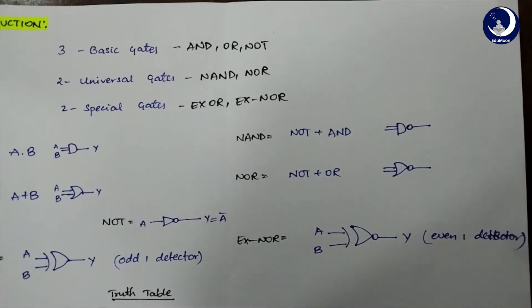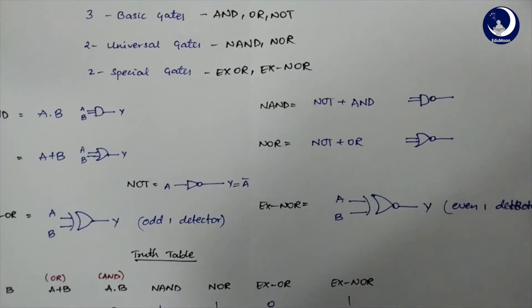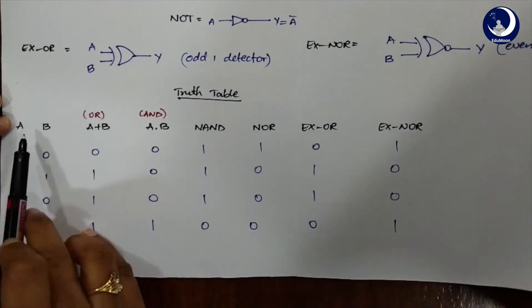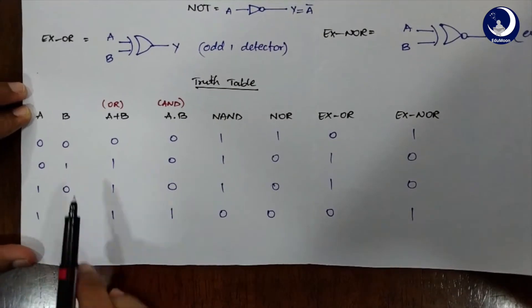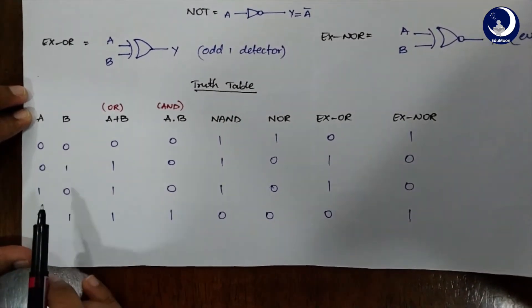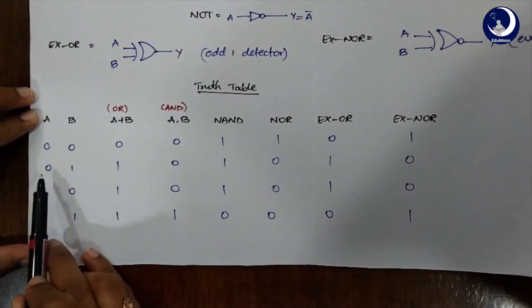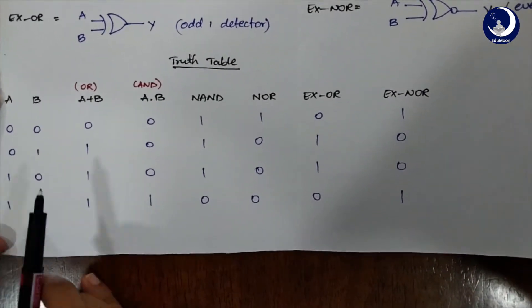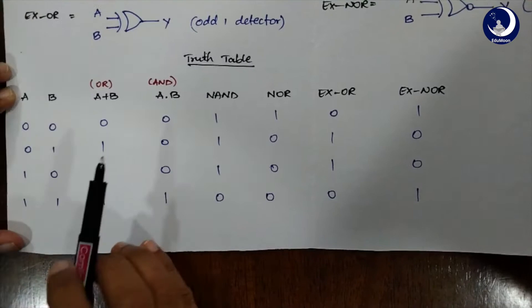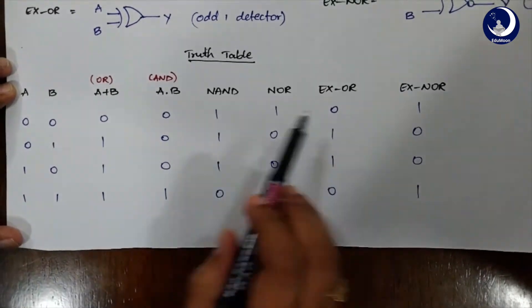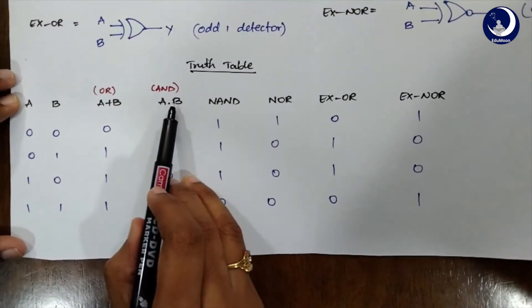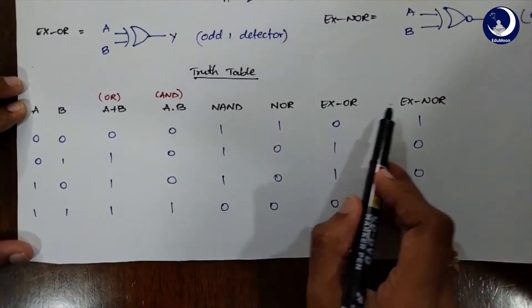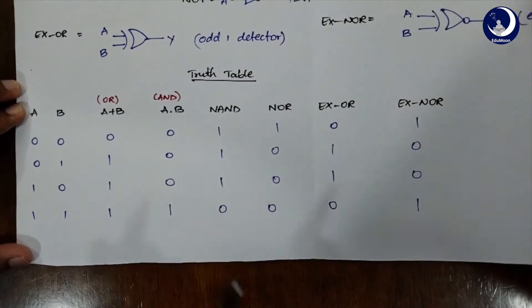Now let's look onto the values of the truth tables. For given inputs A and B, we can consider four such values: 00, 01, 10, and 11. Now let's just go through the AND, OR, NAND, NOR, XOR, and XNOR truth tables.